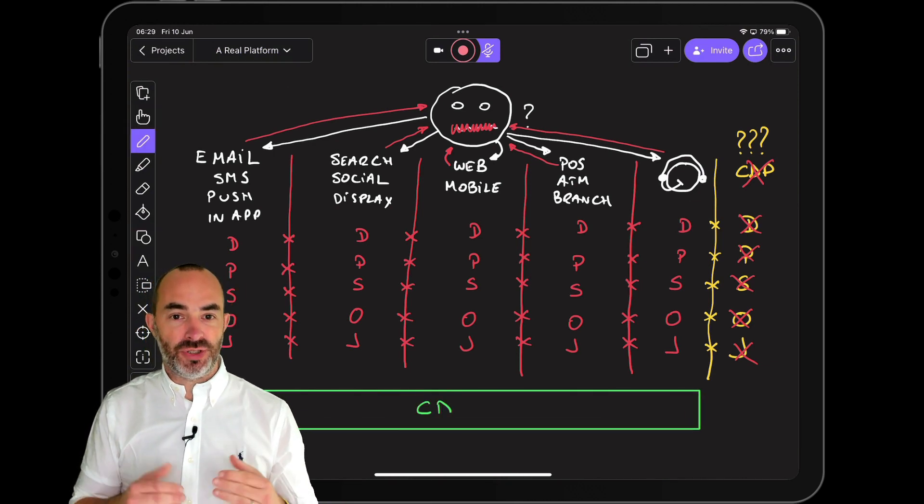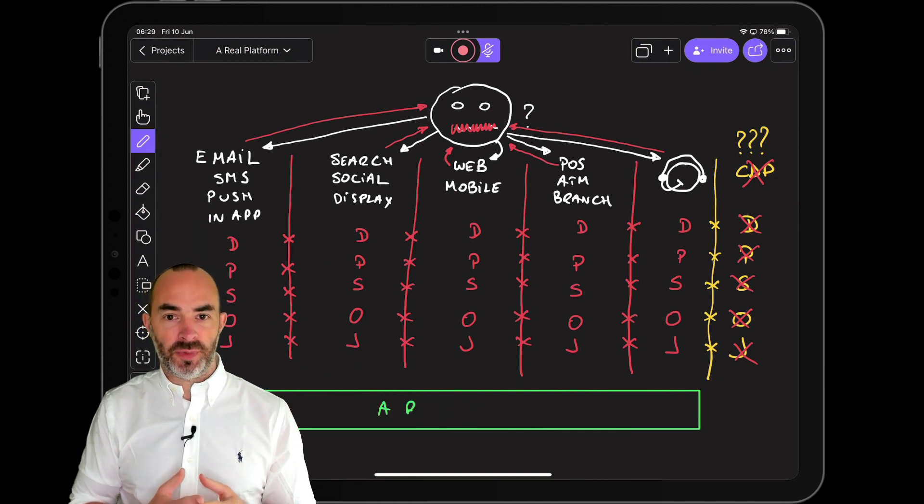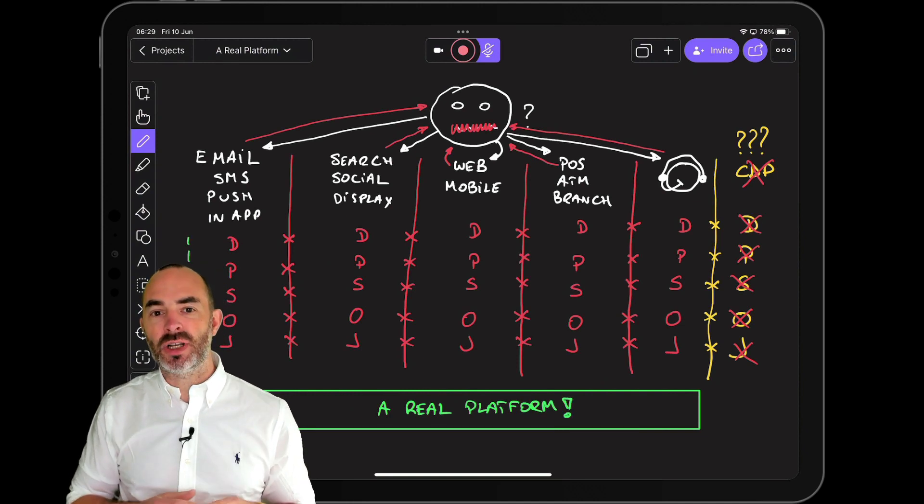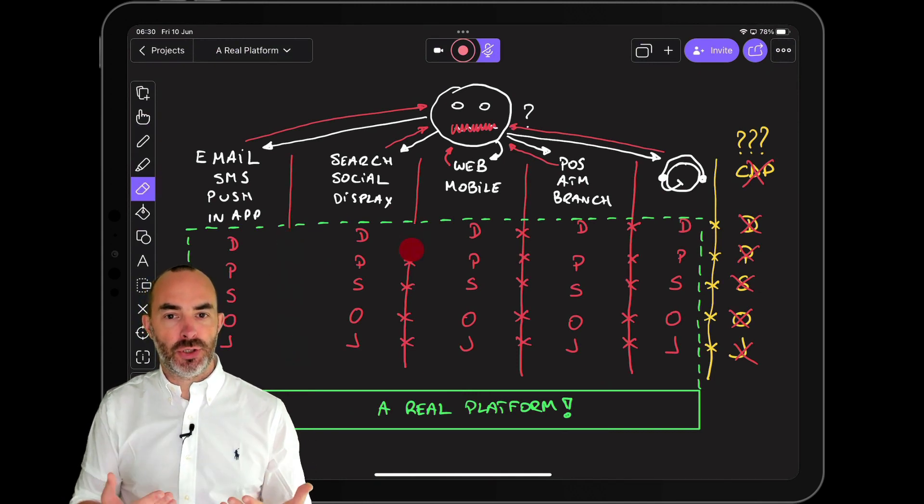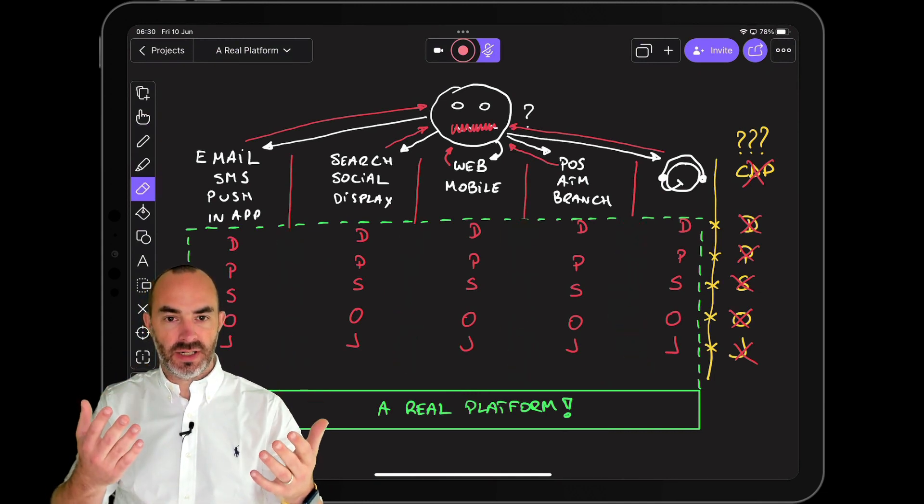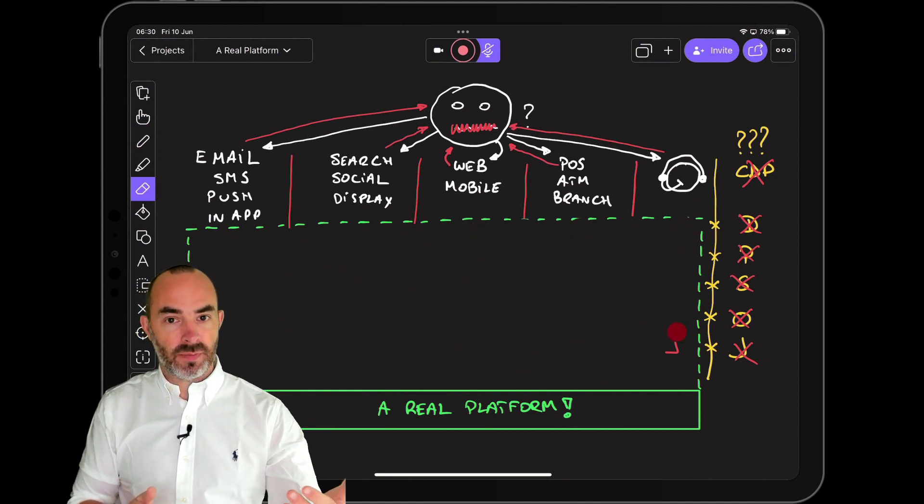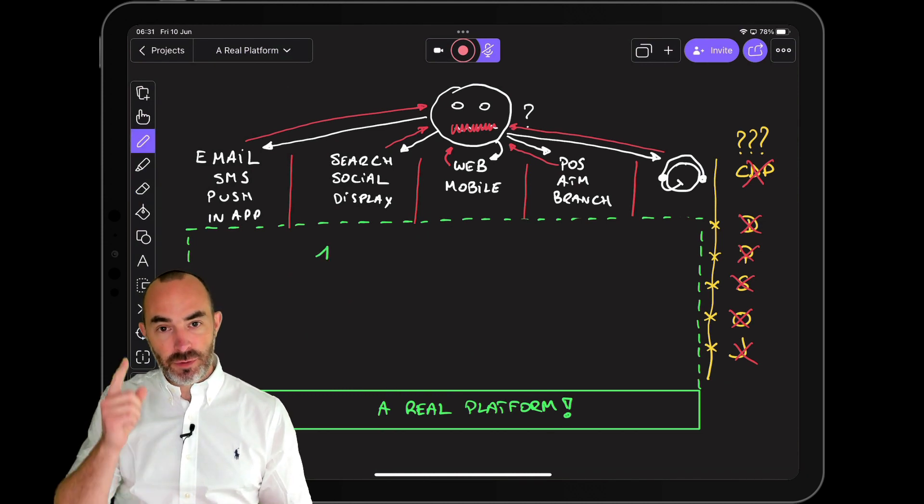The second option is to position the CDP as a true platform layer. A real platform this time, that sits under every other application, that has the intention to remove the complexity that sits above. A real platform should be built to consume and replace what sits above it. It should remove siloed data stores by really removing them, and it should remove the 10 or 15 single views of your customer and give you one instead.